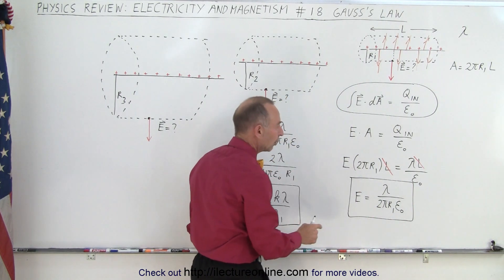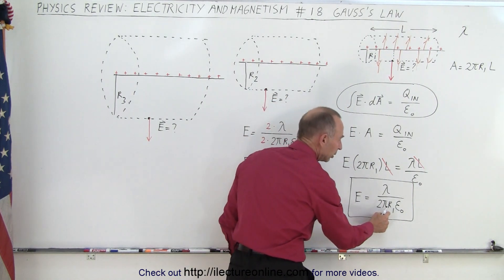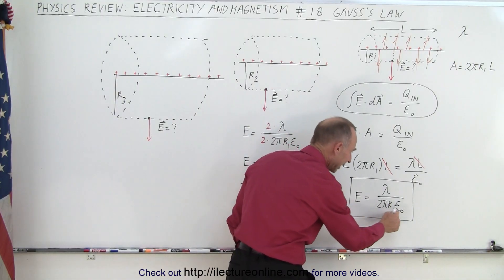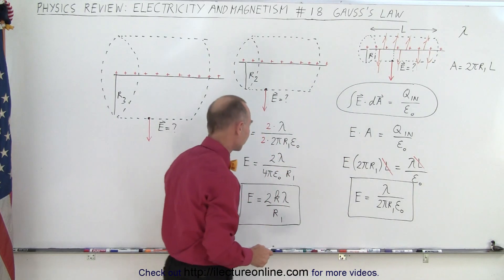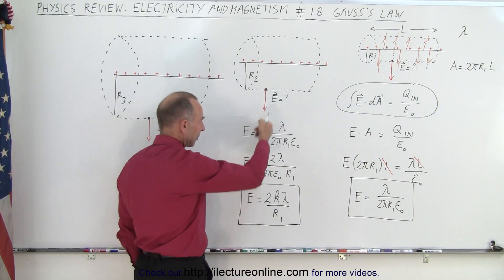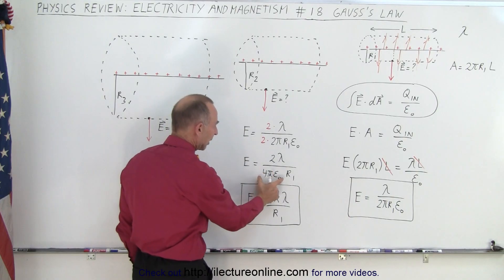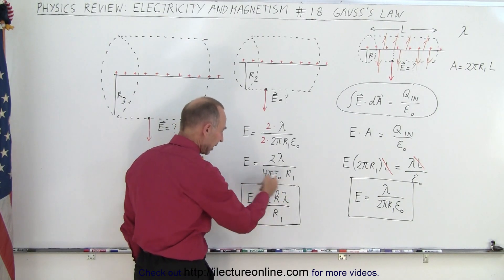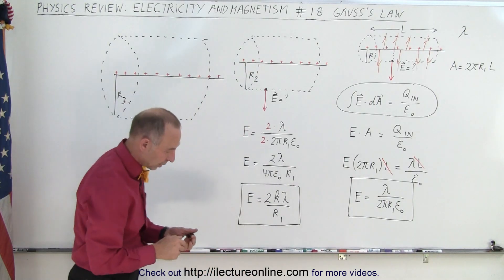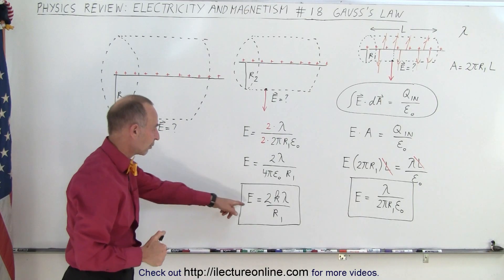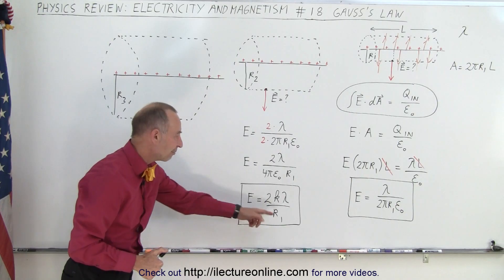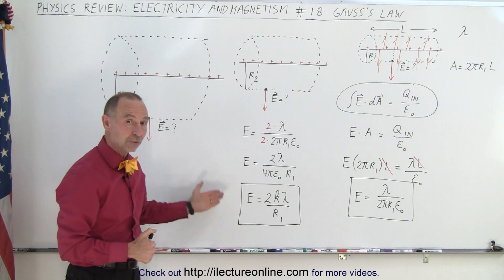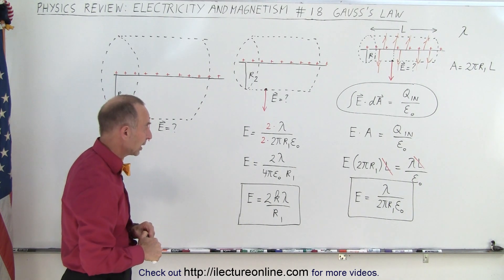Realizing that 1 over 4 pi epsilon sub naught equals k, if we multiply both the top and bottom by 2 we end up with 2 lambda divided by 4 pi epsilon sub naught times the radius of the Gaussian surface, which reduces to a more common equation for the electric field at a distance r away from a linear charge density. We can very easily get the same result as we did a few videos ago when we integrated.